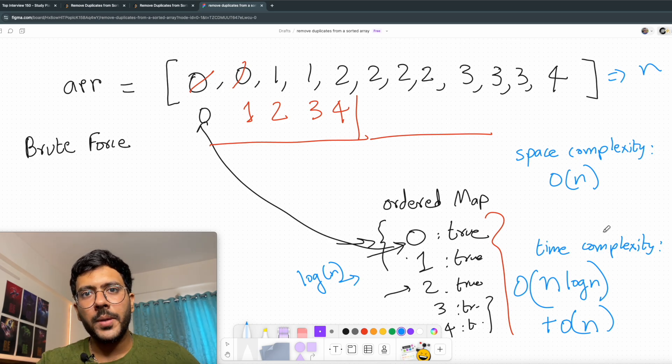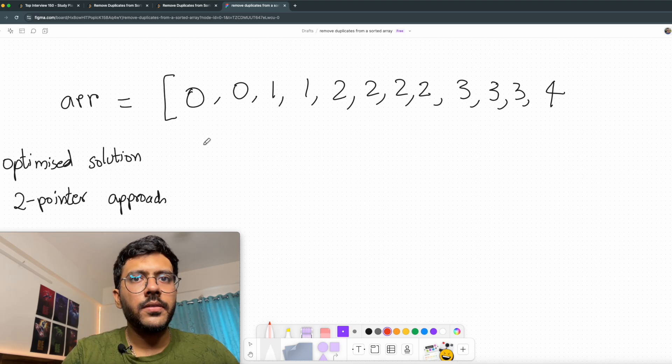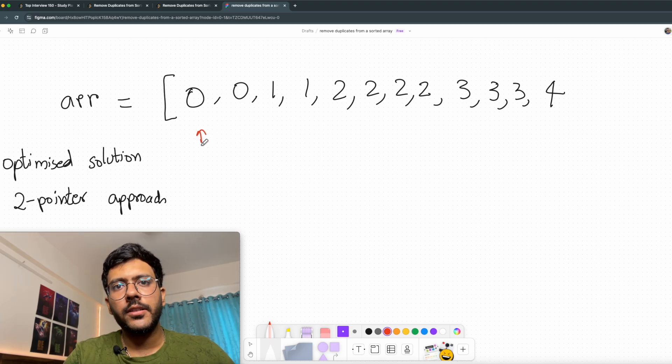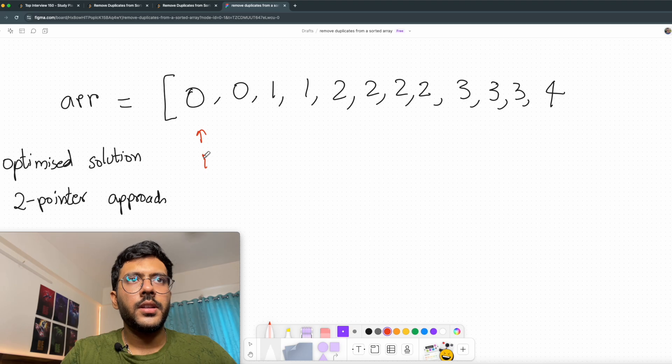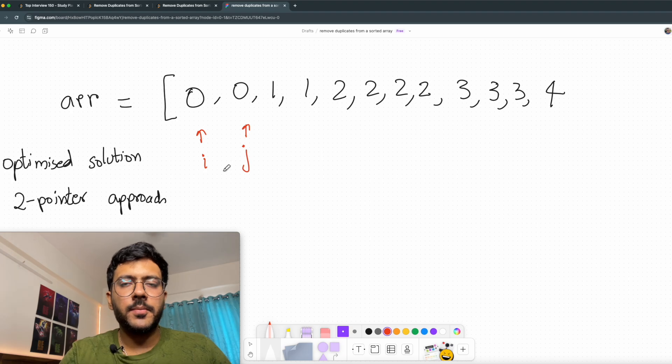Now we can optimize this with a more optimized solution. For my optimized solution, I will use a two-pointer approach. I will have one pointer pointing at the first element and the second pointer pointing at the second element. I will name my pointers i and j. Now my i will always have unique elements present. Let's see the execution.